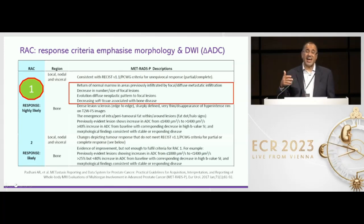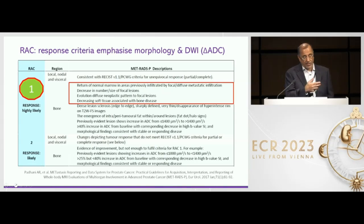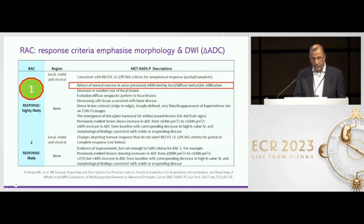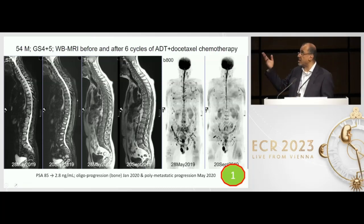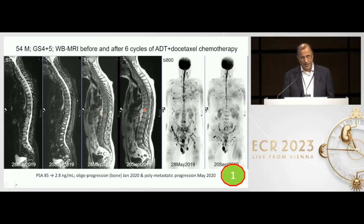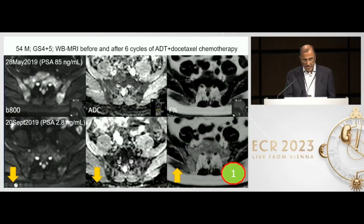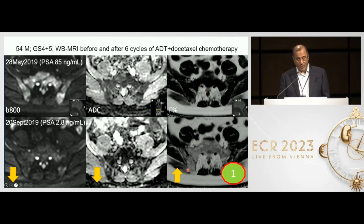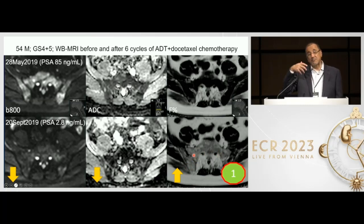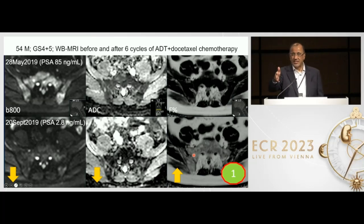RAC 1 — response assessment highly likely — encompasses a reduction in tumor volume, a decrease in disease outside the bone, diffuse disease becoming focal disease. Looking at this man, he's clearly responding. On the T1 sequence it's quite difficult to say there's more fat, but if you look carefully you can see the fat is coming back. The signal intensity on the B800 is not quite as clear on 3T, but if you look at the raw data and the fat fraction — before and on treatment — you can see the return of fat. That's why fat fraction is a mandatory reconstruction: it gives you that detail.